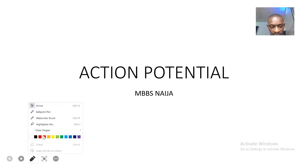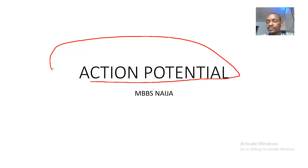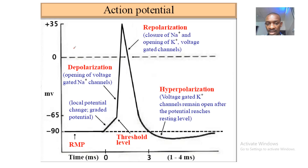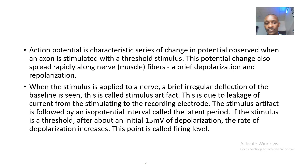Good day, guys. Today we'll be talking about action potential — action potential in the resting membrane potential, that's in the excitable tissues. This is a diagram showing an action potential where you can see the resting membrane potential, the firing stage, the threshold, and it goes up before it comes back down again.